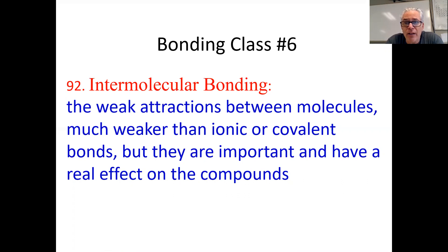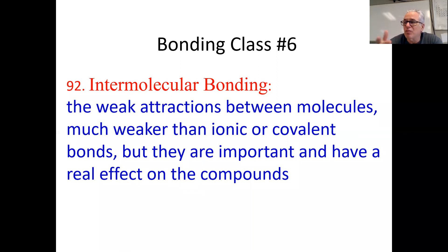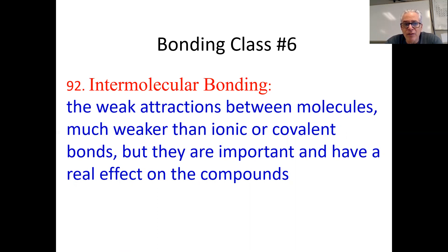Ionic is the strongest, covalent very strong — not quite as strong as ionic, but not in any way a slouch. Metallic bonds hold metals together. The bonds we're going to talk about now are called intermolecular.